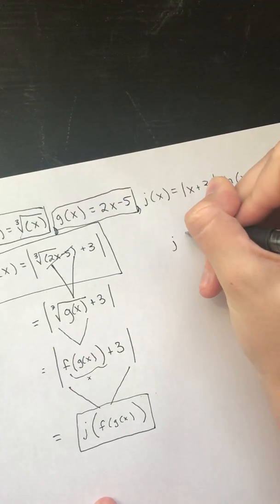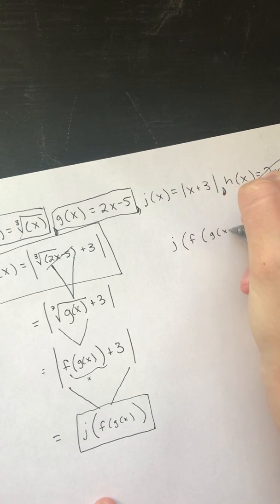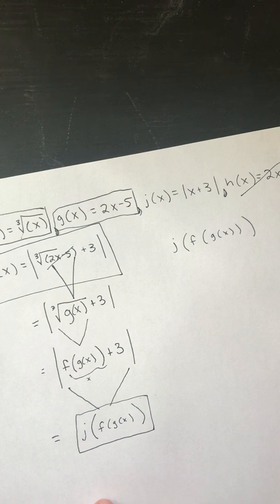So j of f of g of x. There's so many parentheses. It's hideous. I think I put too many. No? Okay, whatever.